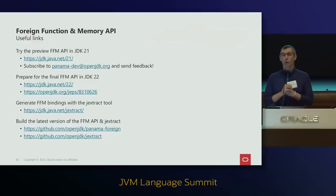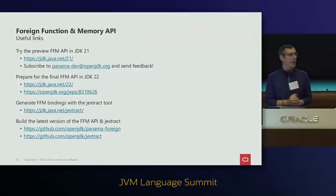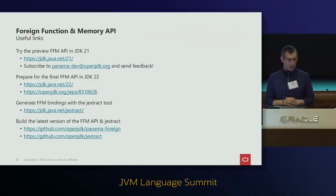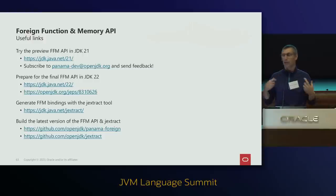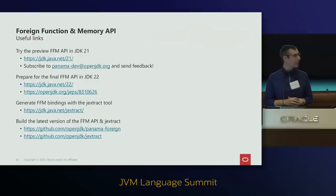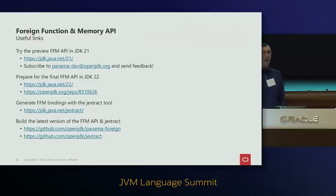I encourage you to download JDK 21 and play with the FFM API. Now is an ideal time to report feedback to the Panama mailing list. We are preparing to finalize the API in Java 22. There are links to the various JEPs. jextract is available as a standalone downloadable tool from the JDK Java.net page — you don't need any complex building or setup. And that's it.